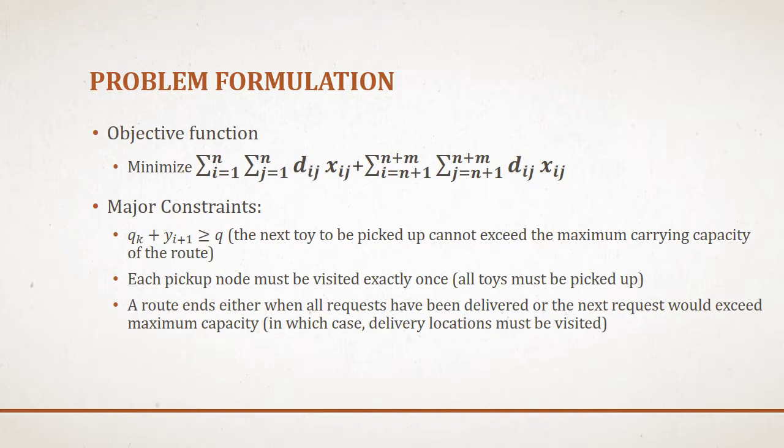Given these parameters, here is my objective that I'm trying to minimize. It's similar to the standard traveling salesman, but there are two components here instead of one: a pickup component and a delivery component to my objective. In addition to the standard TSP constraints, the biggest one that my code enforced was the carrying capacity constraint. You could only travel to a subset of the total population before having to stop and drop off the toys at their respective bins.